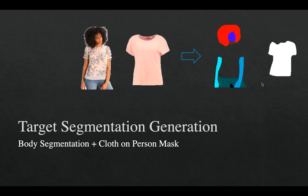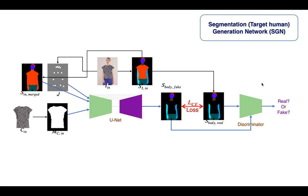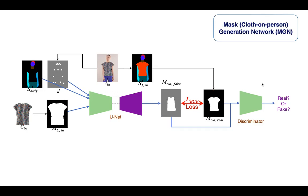Now I will go into more details of our proposed method. First, we generate the target body segmentation and the target cloth on-person mask based on the inputs. We generate the target human body segmentation according to the target cloth using a generator-discriminator network, which we call the segmentation generation network. We generate the body segmentation except for the upper clothing area. Then we use the mask generation network to generate the target cloth mask on person, using a similar GAN network.